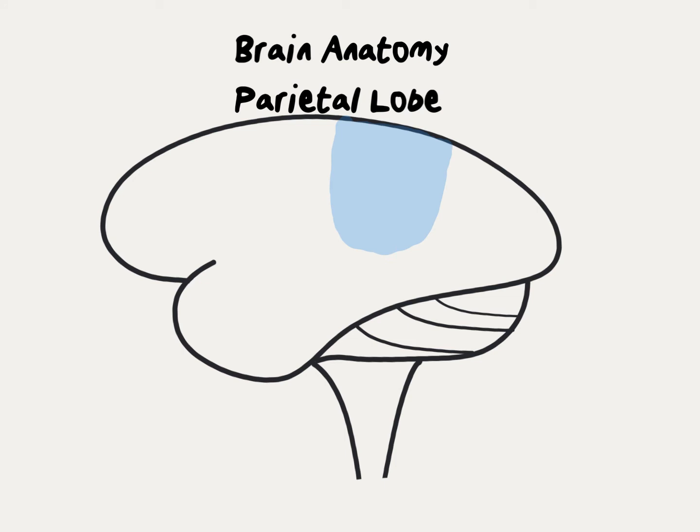The parietal lobe is located behind the frontal lobe. This area is responsible for receiving and processing sensory information about things like light touch, sense of temperature, as well as pressure and pain.